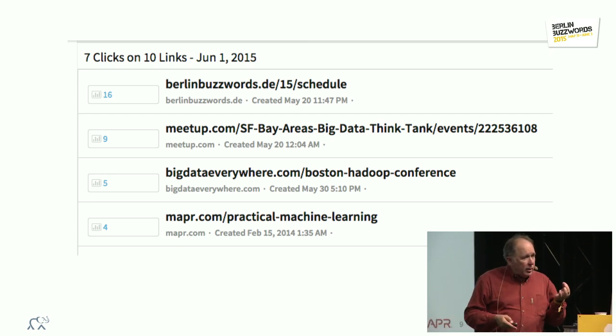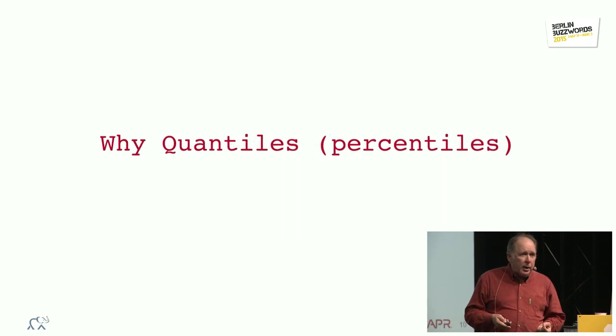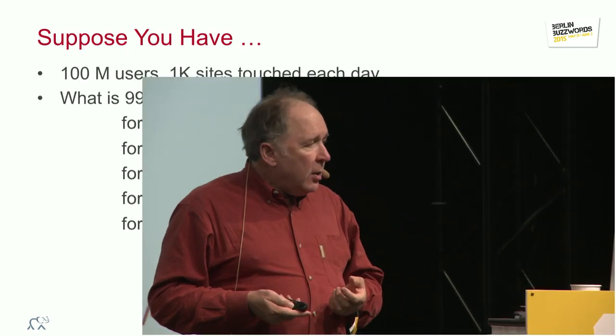So, this is a great example where they should have been using good online algorithms or at least delaying everything the same amount and getting decent answers. That's one answer. Online gives you answers now, hopefully good answers. So, the next question is, why quantiles? Why percentiles?